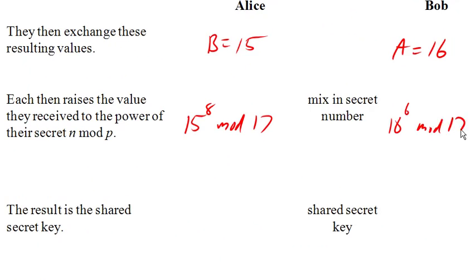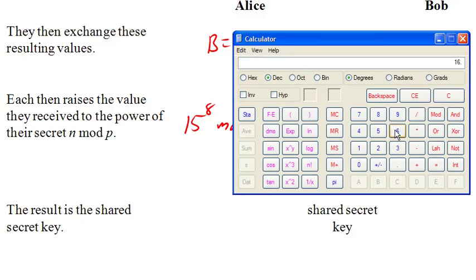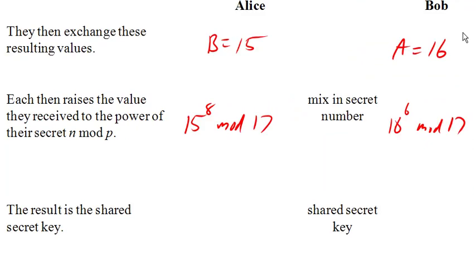And if we do that, let's see what we get. 15 to the 8th is a really big number, divided by 17. I'm gonna have a little hard time doing this by using this calculator, so I actually already computed this using a cool little website which lets me calculate these out. And this value turns out to be 1, and this value also turns out to be 1.